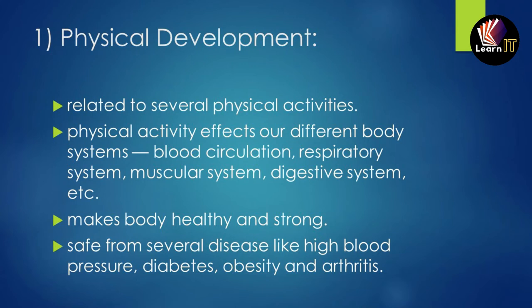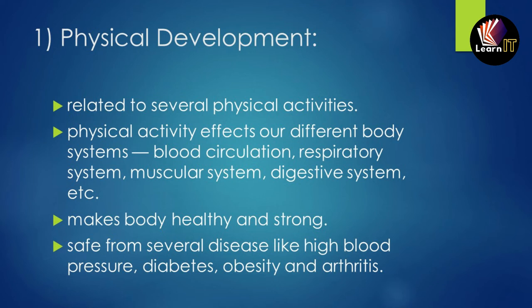The first objective is physical development. The main objective of physical education is physical development. Physical education involves several physical activities, which affect different body systems like the blood circulatory system, respiratory system, muscular system, and digestive system. This results in the development of the size and shape of organs, making the body healthy and strong, and keeping us safe from diseases like high blood pressure, diabetes, obesity, and arthritis.